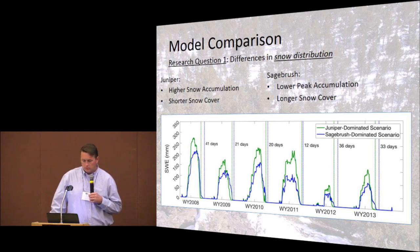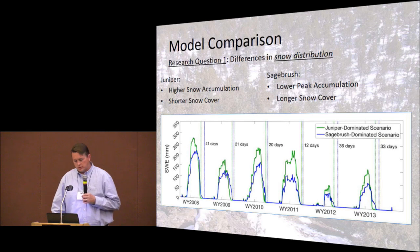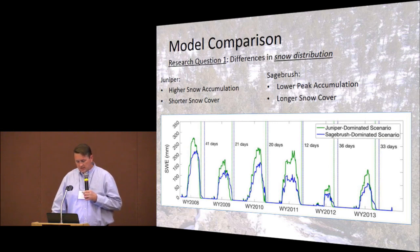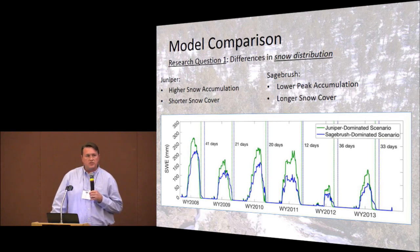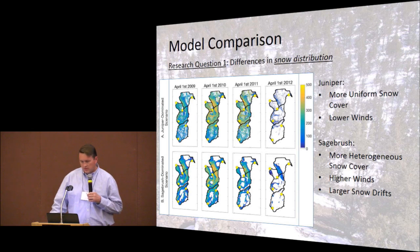Here we're looking at snow water equivalent predicted by the model for both the juniper and sagebrush conditions, showing differences in snow accumulation across six water years aggregated across all four watersheds. For the juniper condition we actually see higher snow accumulation, but that snow melts off a little sooner. The green line is for juniper and the blue line is for the sagebrush-dominated condition. Under sagebrush, we're getting perhaps less snow accumulation, but that snow stays on the landscape longer.